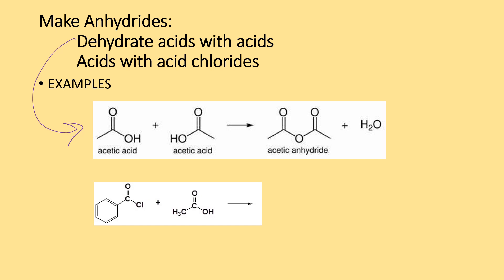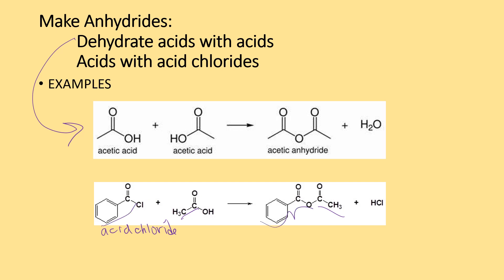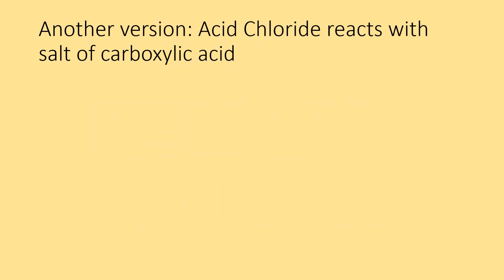What if we use an acid chloride and acetic acid? This time we get a mixed anhydride — we have the two carbons from the acid and then the benzene ring and the carbonyl from the benzoyl chloride.